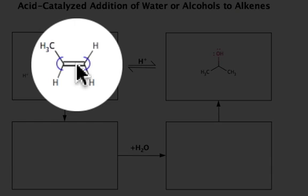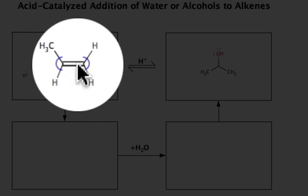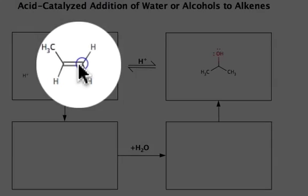What I could see is that if I add the proton to this carbon atom, I will generate a highly unstable primary carbocation. Whereas if I add the proton to this carbon atom, I'll generate a more acceptable secondary carbocation.